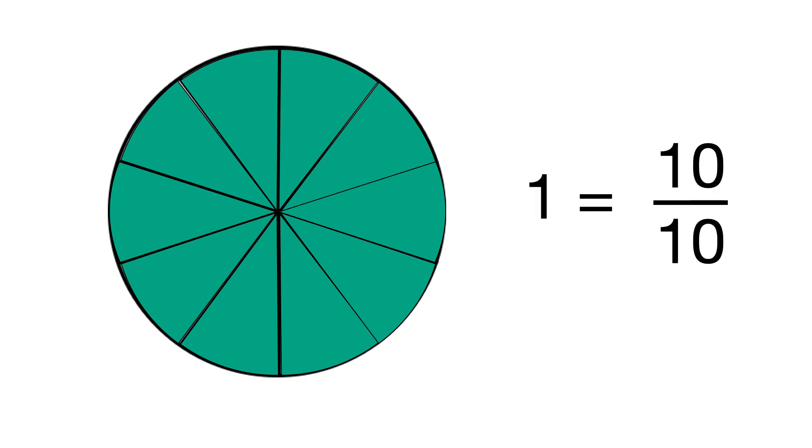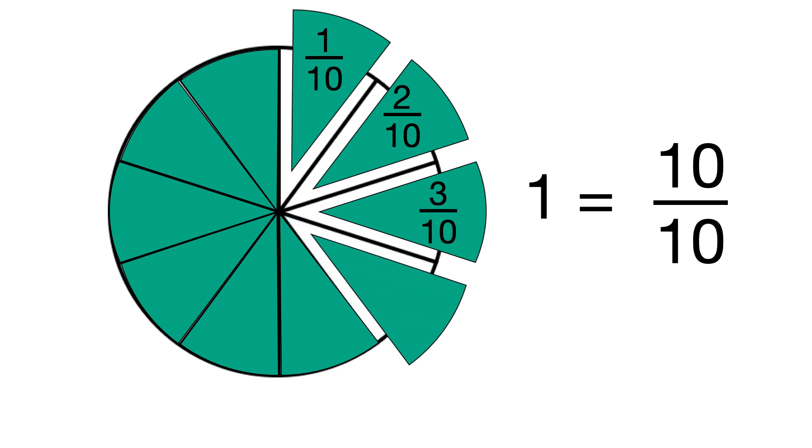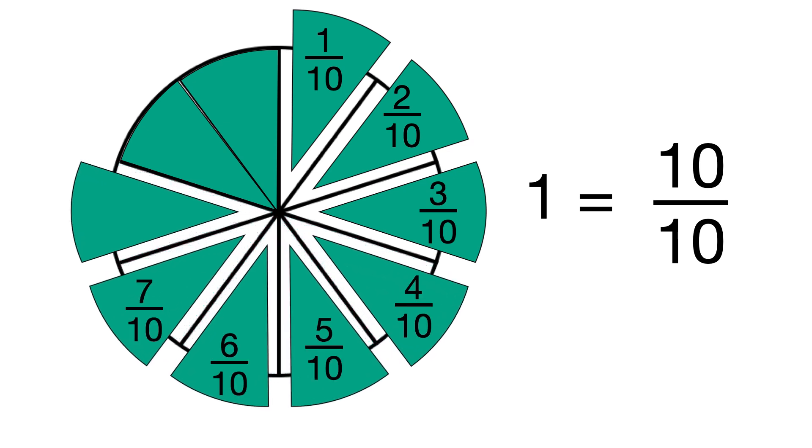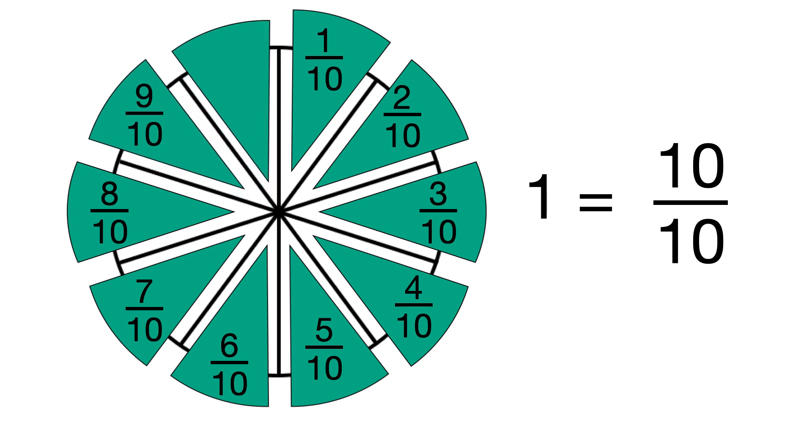There are ten tenths in one whole and we count up to one in tenths like this. One tenth, two tenths, three tenths, four tenths and so on, all the way up to ten tenths.